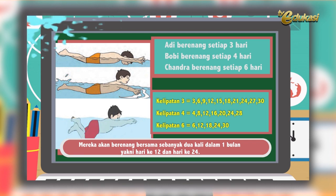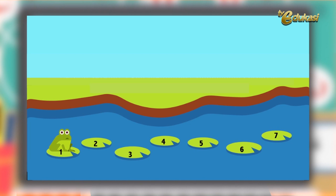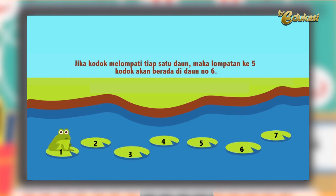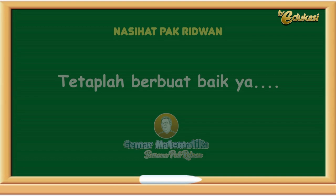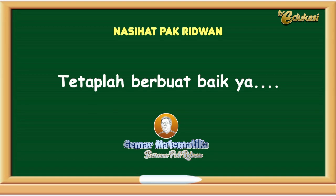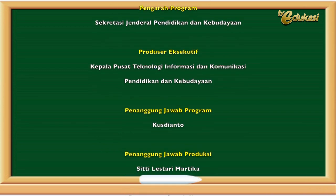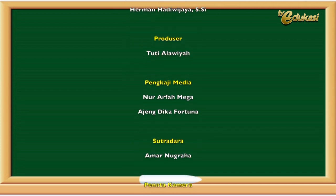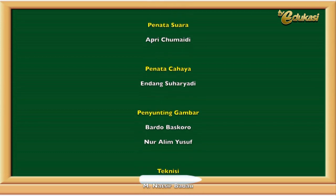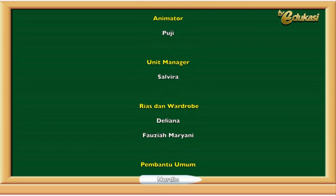Tentang soal yang tadi tentang kodok, karena dia lompat 1 kali, kalau dia di posisi titik pertama, maka setelah 5 kali melompat dia akan di posisi titik ke-6, atau di daun yang ke-6. Mudah kan? Ingat, belajar matematika bersama Pak Ridwan membuat matematika menjadi lebih mudah. Sampai jumpa di video selanjutnya.